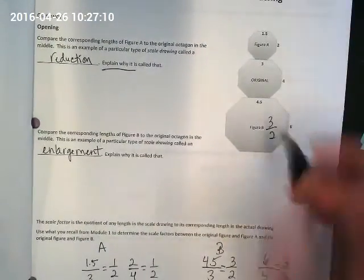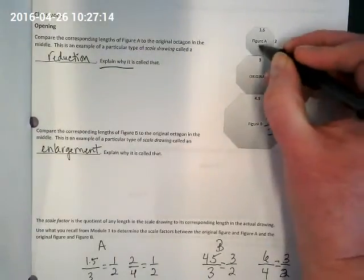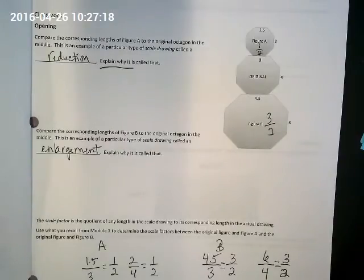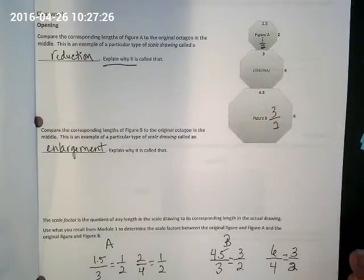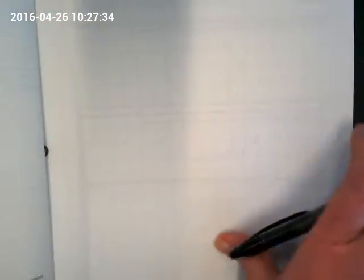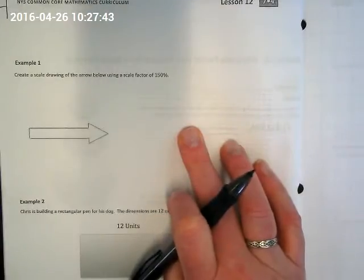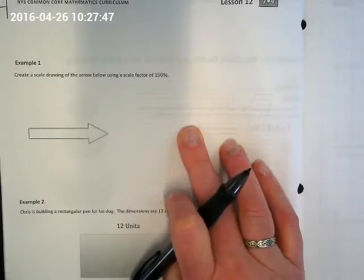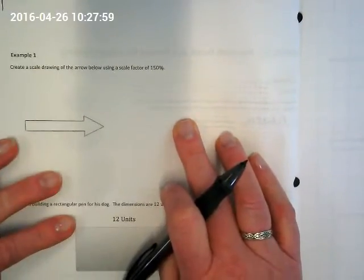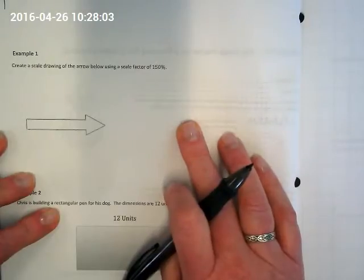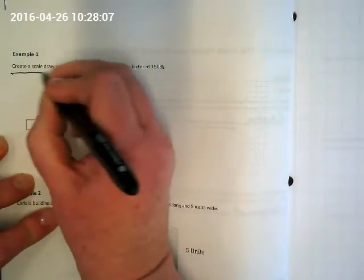So our scale factor for the enlargement is 3 over 2, and our scale factor for the reduction is 1 over 2. So that means the original is 2 over 2, which is really just equal to 1. So if we're saying the original is 2 over 2, it's also equal to 1, which is 1 whole. 1 whole is 100%. Let's turn the page because now we're going to actually make something using scale factor. And hopefully you have access to a calculator.